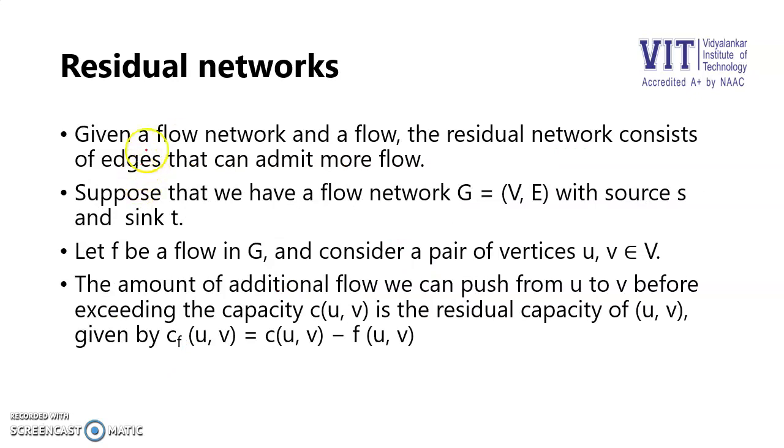There is something called a residual network. Given a flow network and a flow, the residual network consists of edges that can admit more flow. It says that if C is the capacity of the edge (u,v) and f is the actual flow passing from (u,v), then the residual capacity from U to V will be the difference between the capacity and the actual flow.